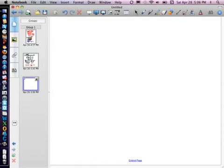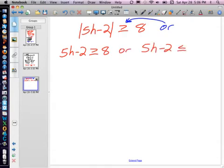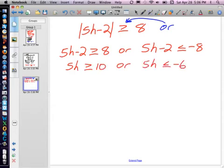If we had |5H - 2| greater than or equal to 8. Remember, if it's greater than, this is an OR statement. So we can say 5H - 2 could have definitely been greater than 8, or 5H - 2 could have been less than or equal to negative 8. Then we just solve. Adding 2 to both sides, dividing both sides by 5.